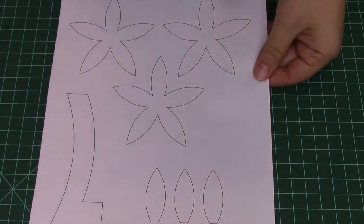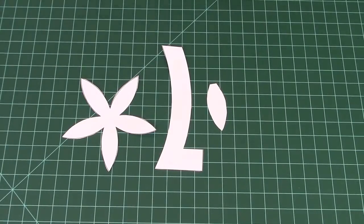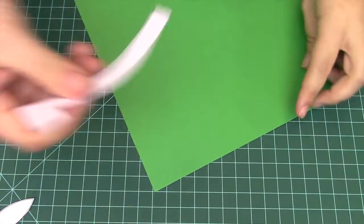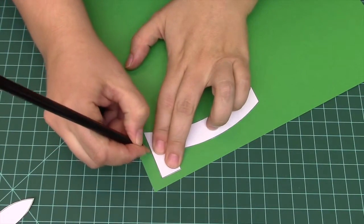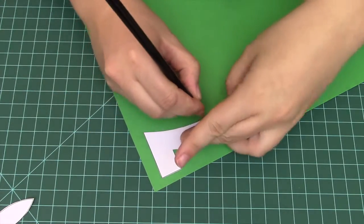Take the third page of the template and cut out the shapes. You will trace these onto construction paper. First trace the green L shape onto the paper. This will be the stem.